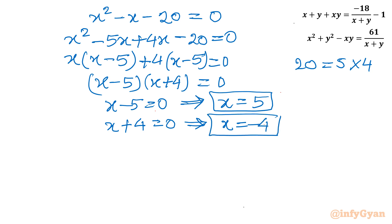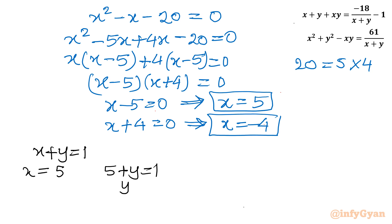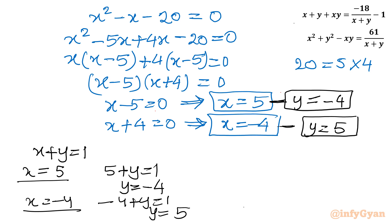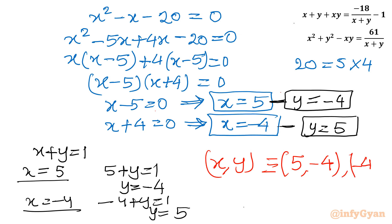Let us find the y values using x plus y equal to 1. When x equals 5, then 5 plus y equals 1, so y equals negative 4. When x equals negative 4, then minus 4 plus y equals 1, so y equals 5. Our final solutions as ordered pairs are x comma y equal to 5 comma negative 4, and x comma y equal to negative 4 comma 5. The equations are symmetrical, so this makes sense.